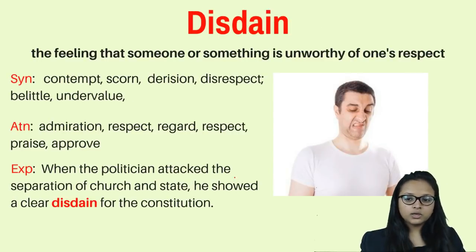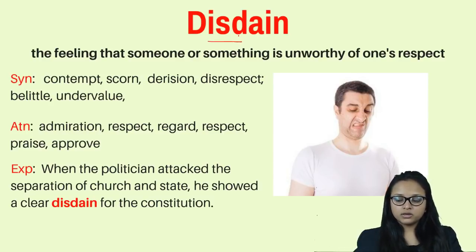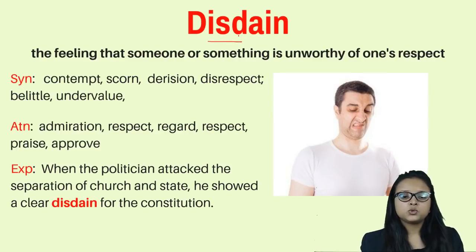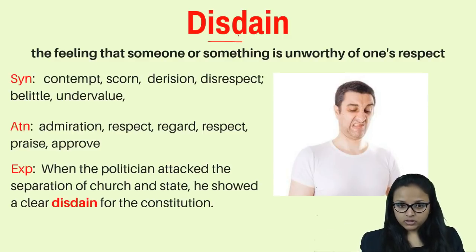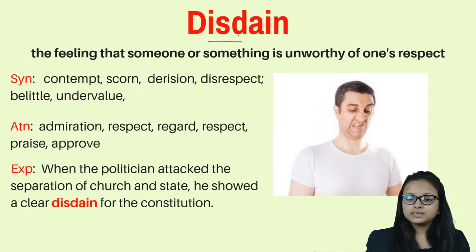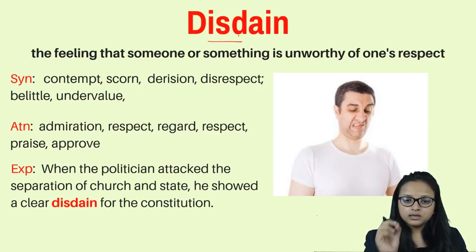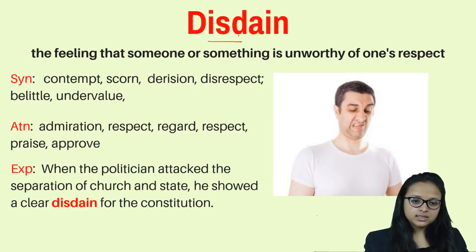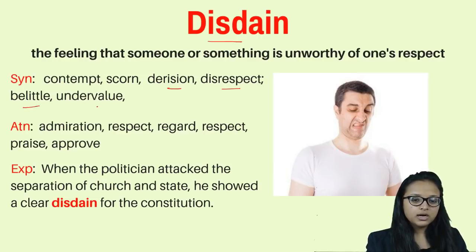The second word is 'disdain.' Disdain is when we look down upon someone — feeling that this person is not worthy of our respect. It is the feeling we have for someone or something, that they do not deserve our respect. We have a feeling of contempt or disrespect for that person. Synonyms are: contempt, scorn, derision, disrespect, belittle, and undervalue.